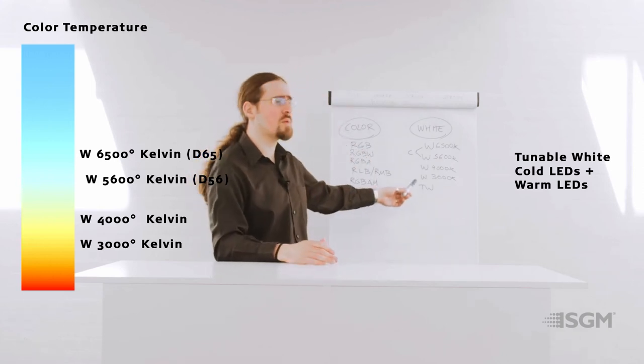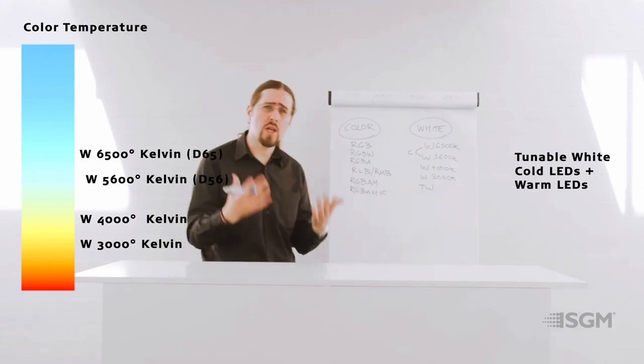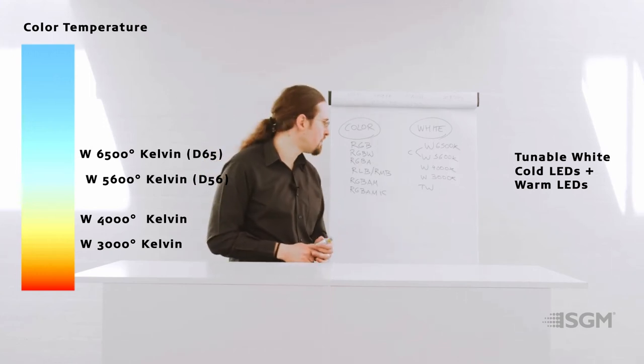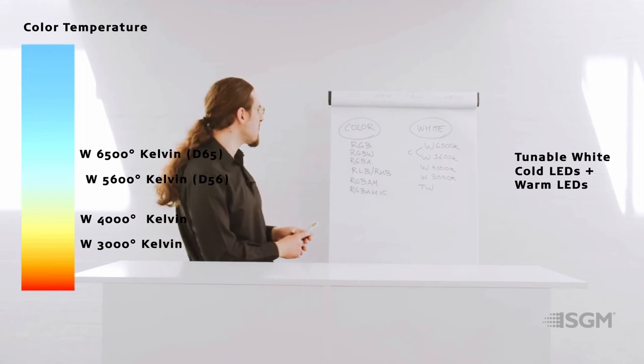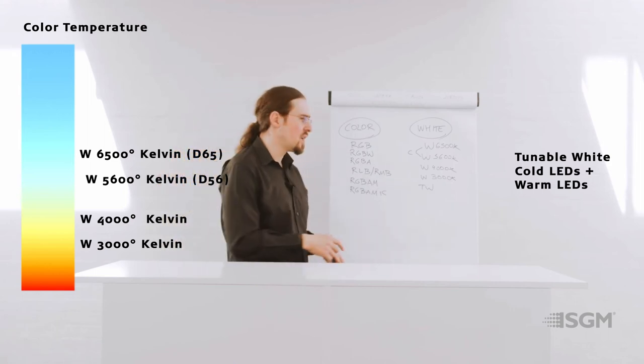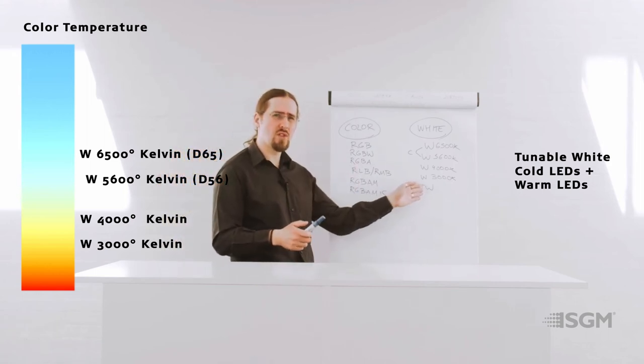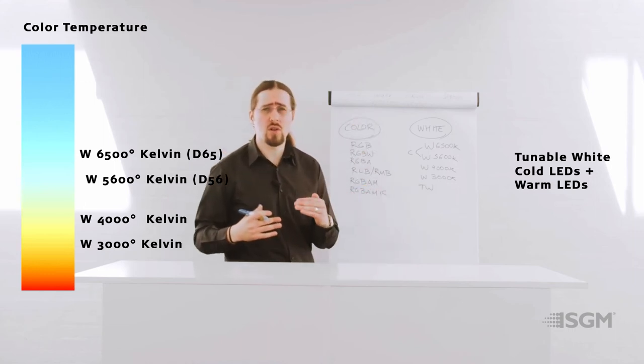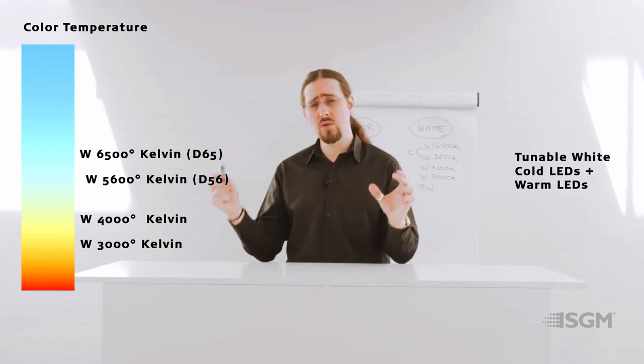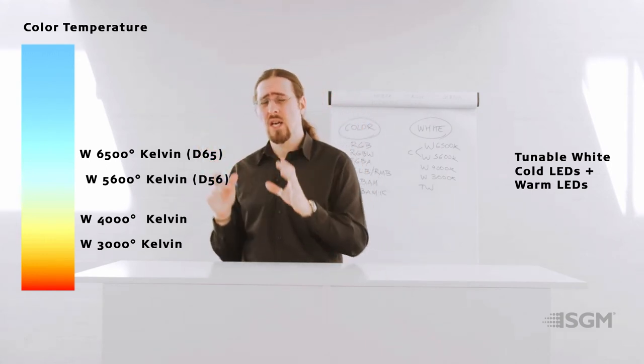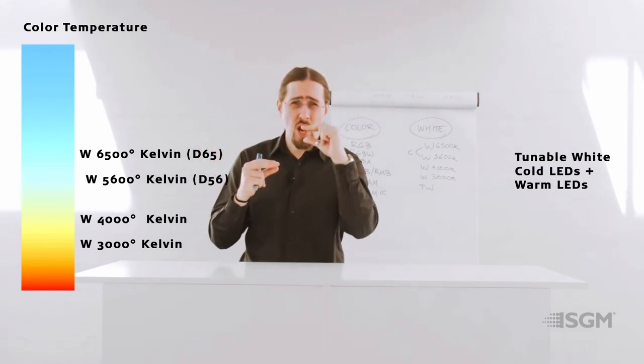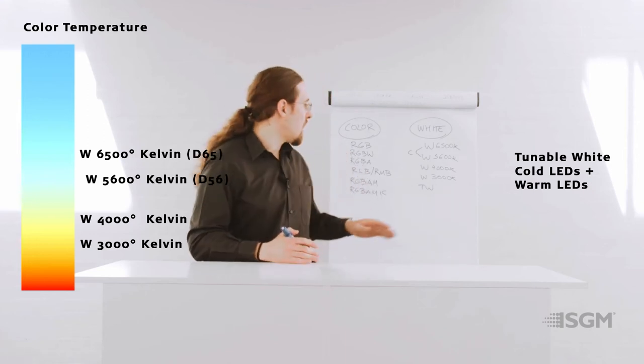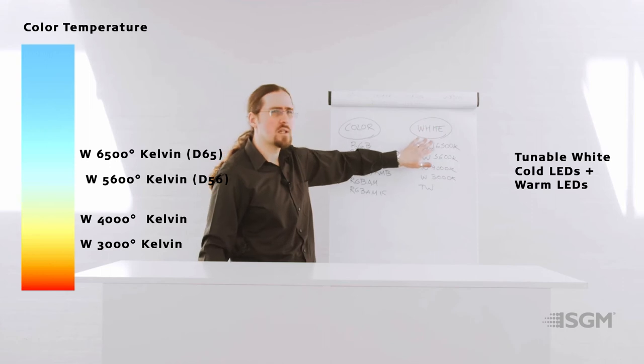And that's what the tunable white gives you when you have control over DMX or any other system. It's also very important to understand that many manufacturers have the possibility of doing this with RGB options, because also when you mix red, green and blue, you are also obtaining white, and depending on how much red or how much blue you add to the mix, you will get a warmer white or you will get a cooler white.